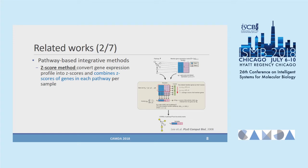Another method is called the Z-score method, which uses Z-normalized scores. They simply convert gene expression profiles into Z-normalized scores and then combine the Z-scores of genes in each pathway per sample. However, both PLAGE and the Z-score method simply treat pathways as sets of genes and combine scoring of genes for each pathway.